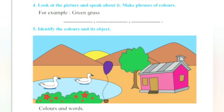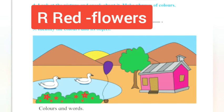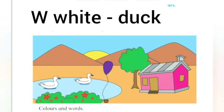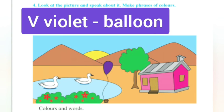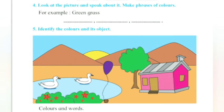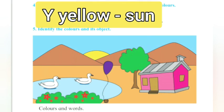Now we will write the colors. Identify the colors and its objects — colors and the words. R for red, red color flowers. W for white, duck or swan. V for violet, balloon. P for pink, pink house. Y for yellow, sun.